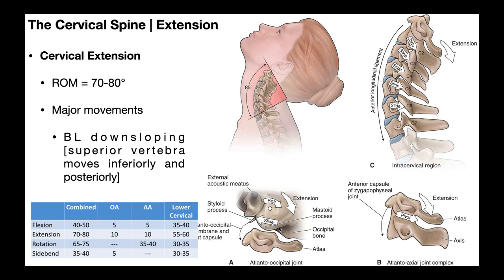At the atlanto-occipital joint, when we go into extension, the occipital condyle rolls posteriorly relative to the atlas. Based on concave-convex rules, when we roll posteriorly about the atlas, there's a little bit of anterior slide — occurring in opposite directions. That anterior slide of the occipital condyle on the atlas maintains contact as the skull rolls posteriorly during extension. Also notice that this posterior roll puts tension on the atlanto-occipital membrane and the joint capsule, which exists more anteriorly.